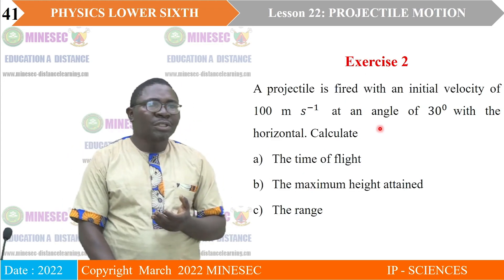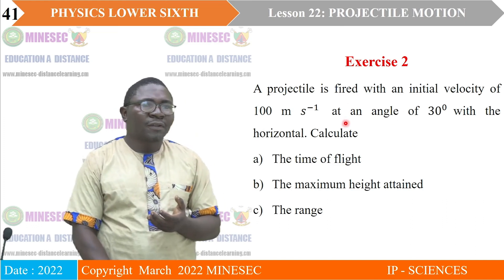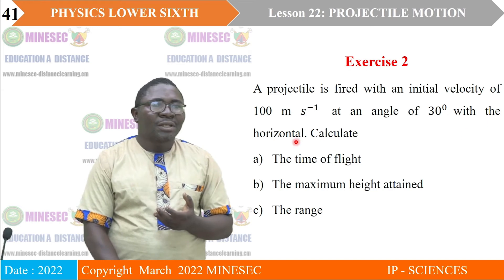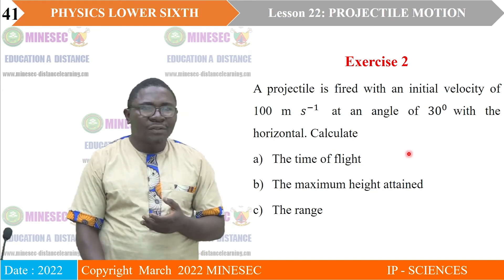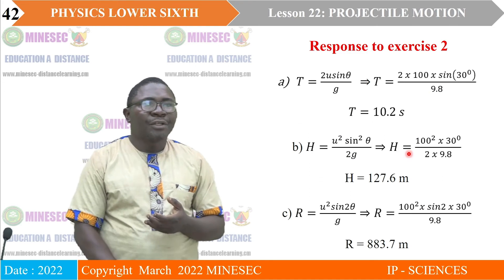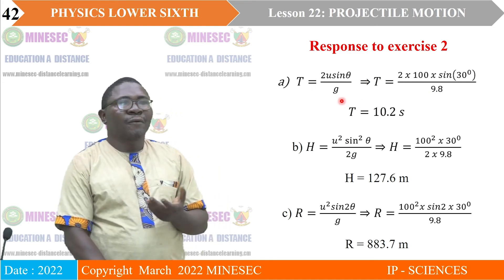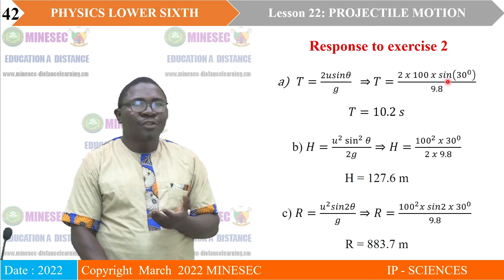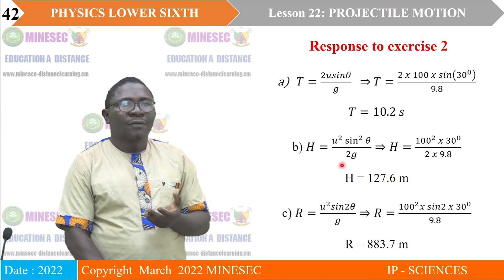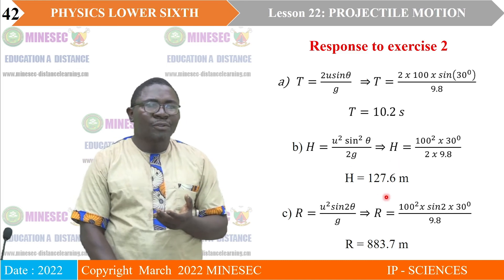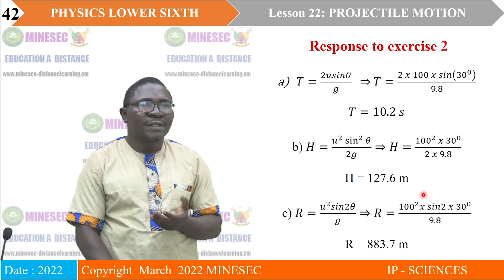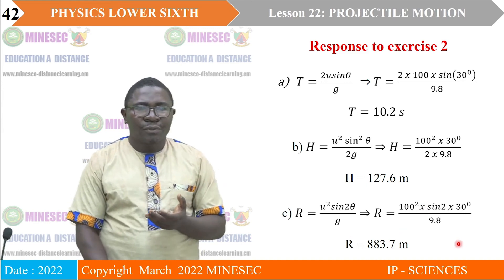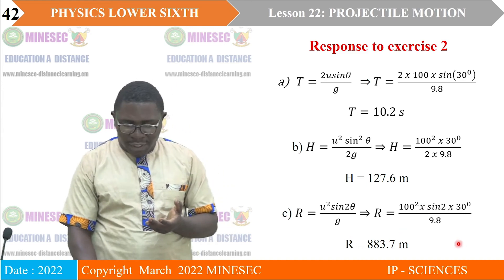Exercise 2: a projectile is fired with an initial velocity of 10 m/s at an angle of 30 degrees with the horizontal. Calculate the time of flight, the maximum height attained, and the range. Substituting into the appropriate formulas: time of flight equals 1.02 seconds, maximum height attained equals 1.276 meters, and the maximum range equals 8.83 meters.